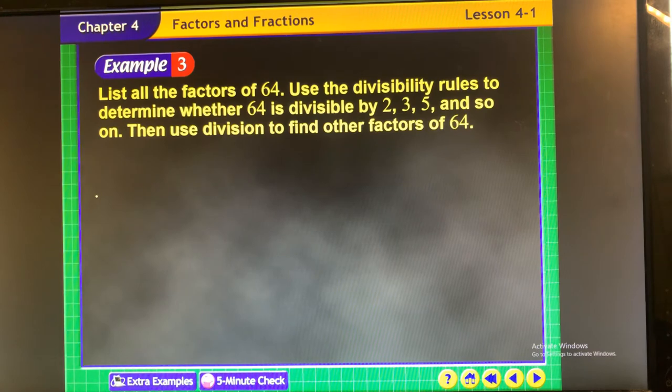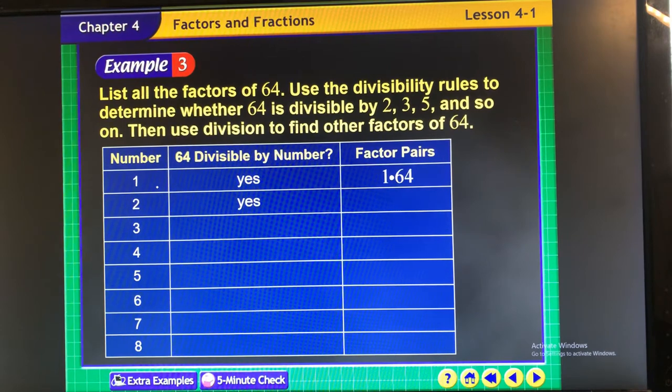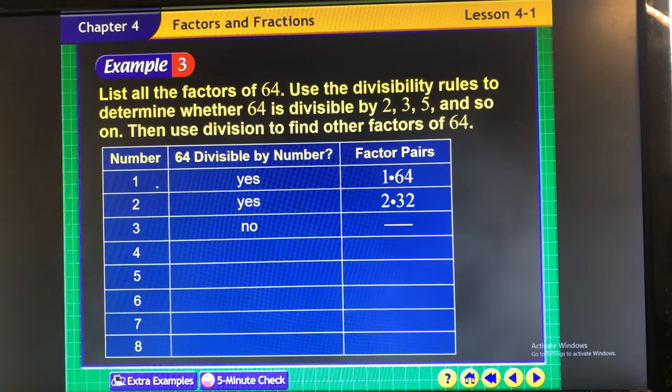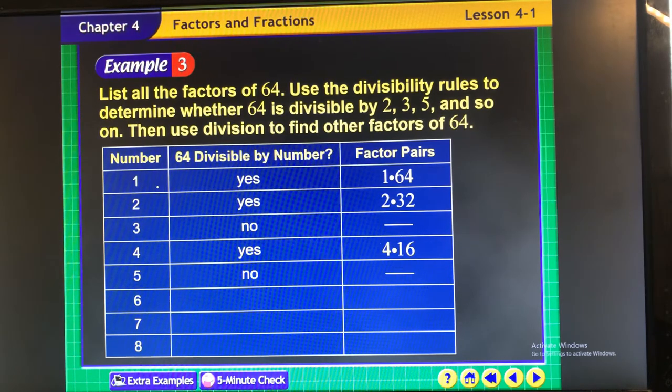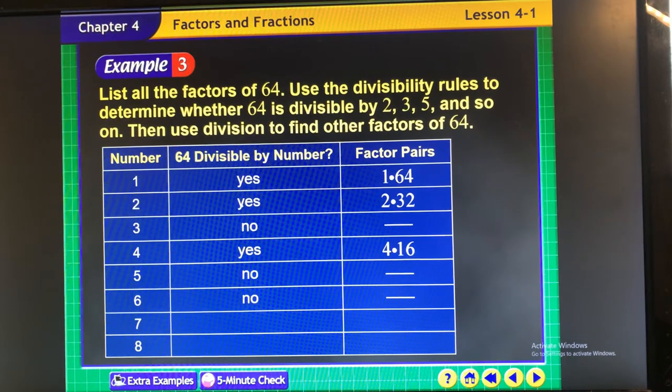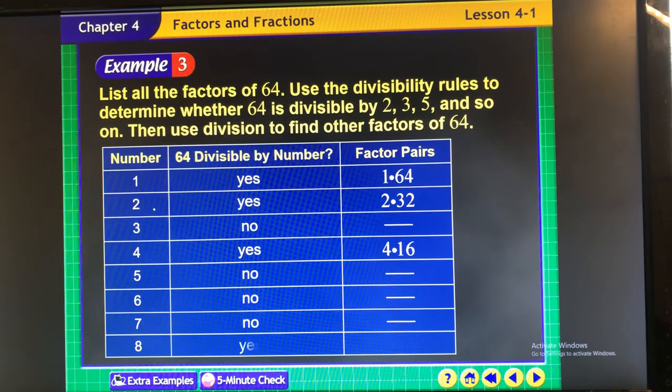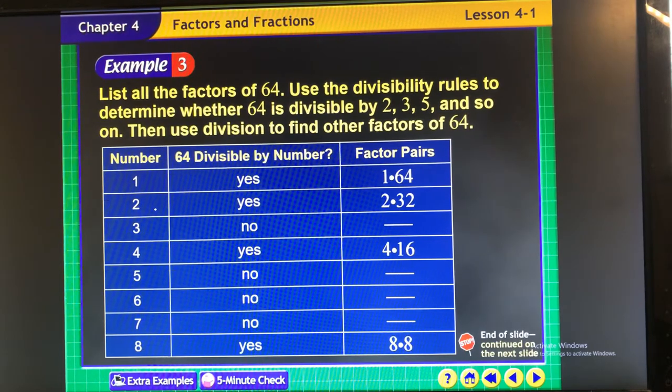List all the factors of 64. So when you're listing the factors, you're going to just list out what numbers multiply to make 64. So 1 and 64, 2 and 32, 3 can't go into it because 6 plus 4 is 10, 4 is 4 and 16, 5 doesn't go into it, 6 doesn't go into it because you didn't say yes to 3, 7 is no, there's no rule we use for 7, and 8 is a yes.